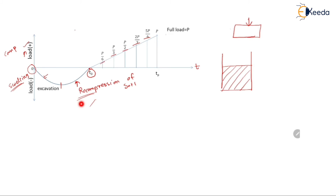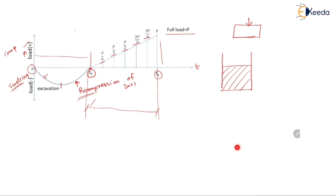The full load P indicates the total weight of the structure after its completion, and the corresponding time Tp is the time required for the construction of that structure. From this graph, we can see that the net compression of the soil has taken place between this time period only, and the compression which occurred during time 0 to T0 is negligible. So when we want to study the consolidation of soil, we will have to consider this time period only.